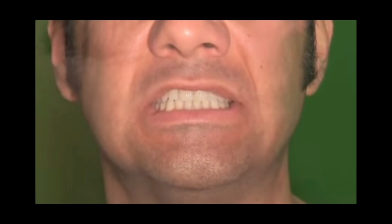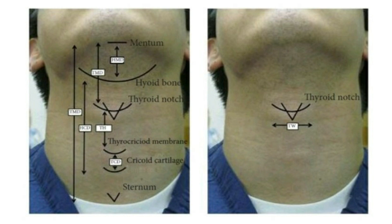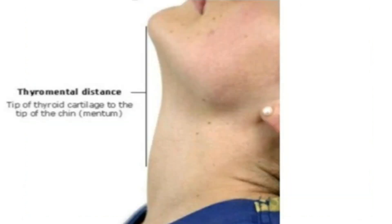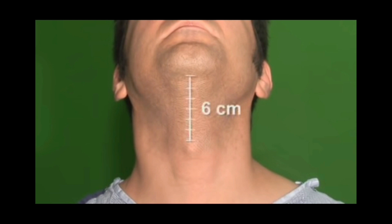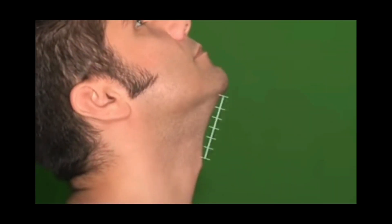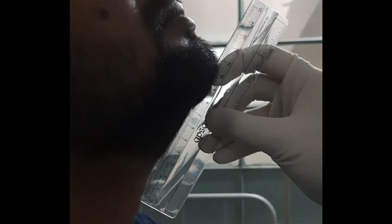Assessment of the mandible and the submandibular space: The normal relation of the upper and lower incisors is important, as an overbite would point towards reduced submandibular space. Laryngoscopy will push the tongue into this space and if it is reduced or narrowed, exposure of the glottis may be inadequate. The thyromental distance — measured between the thyroid notch and the mental symphysis with neck fully extended and mouth closed — should be more than 6 cm. In this patient, the thyromental distance is well above 6.5 cm.